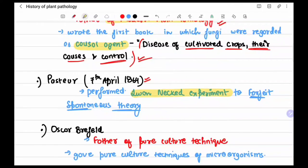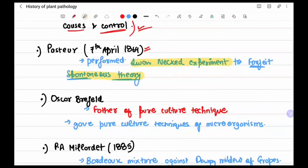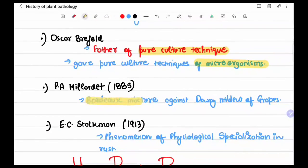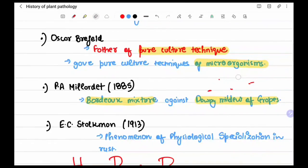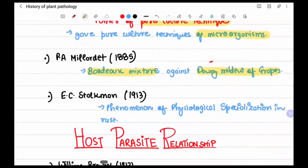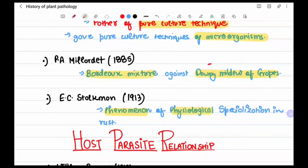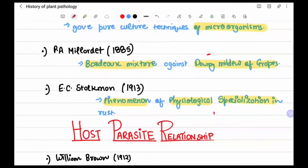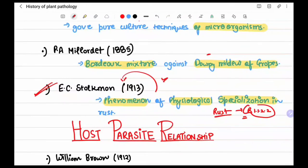Oscar Brefeld is one of the fathers of the pure culture technique, giving us the pure culture technique of microorganisms. P.A. Millardet in 1885 discovered the famous Bordeaux mixture against the downy mildew of grapes — note that it is downy mildew, not powdery mildew. E.C. Stakman in 1913 discovered the phenomenon of physiological specialization in rust, identifying different strains of rust fungi.